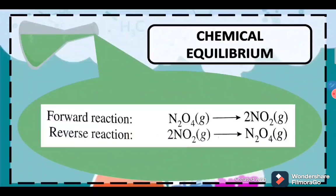That is why, in order for us to identify a certain chemical reaction as reversible, it never goes to completion, because there is a continuous process of creating and breaking down of the product and the reactant substances.